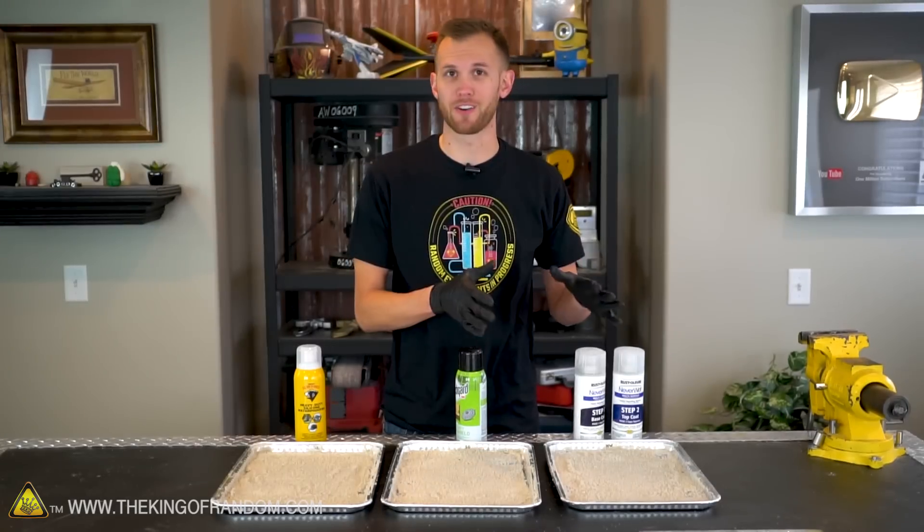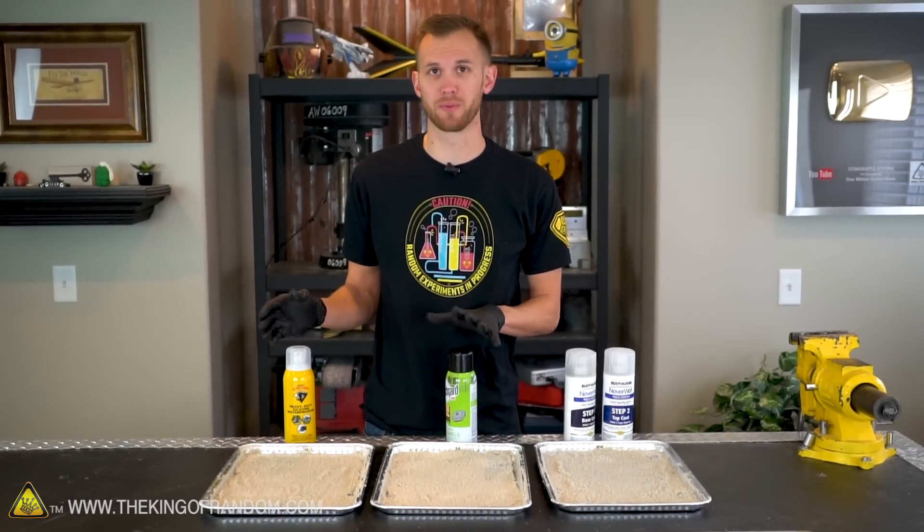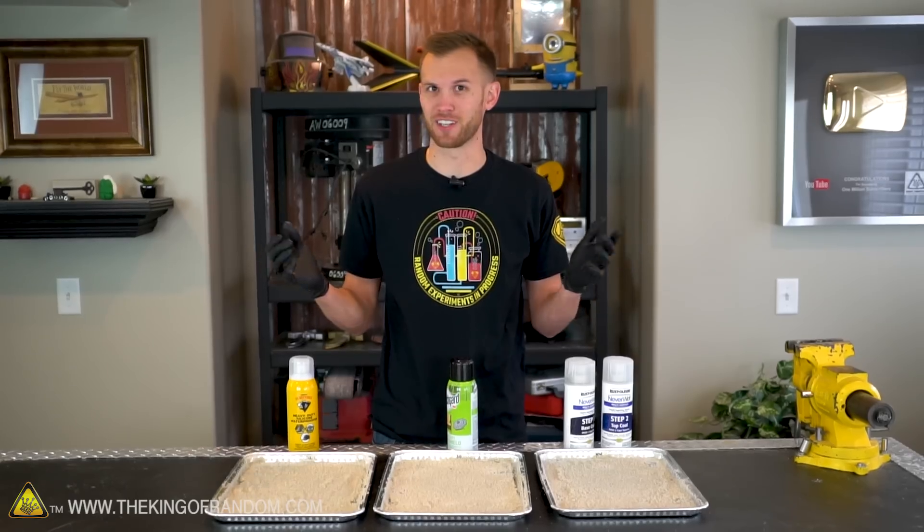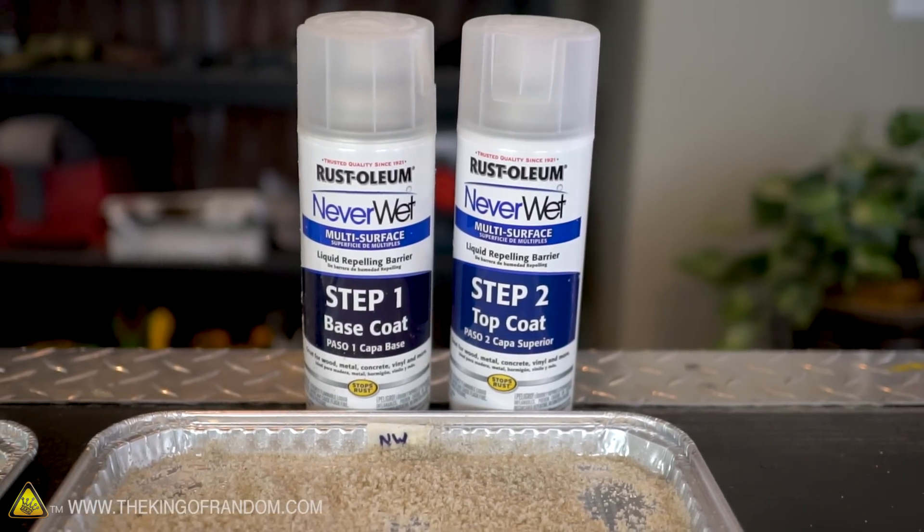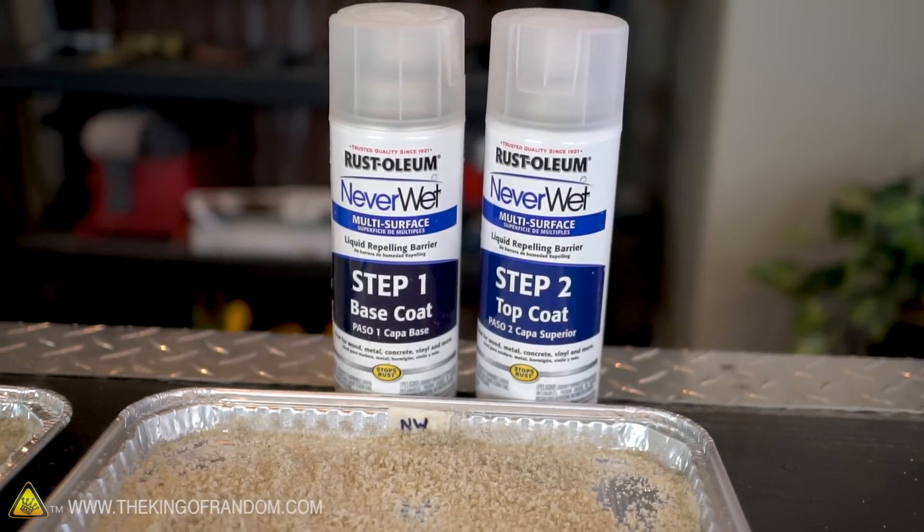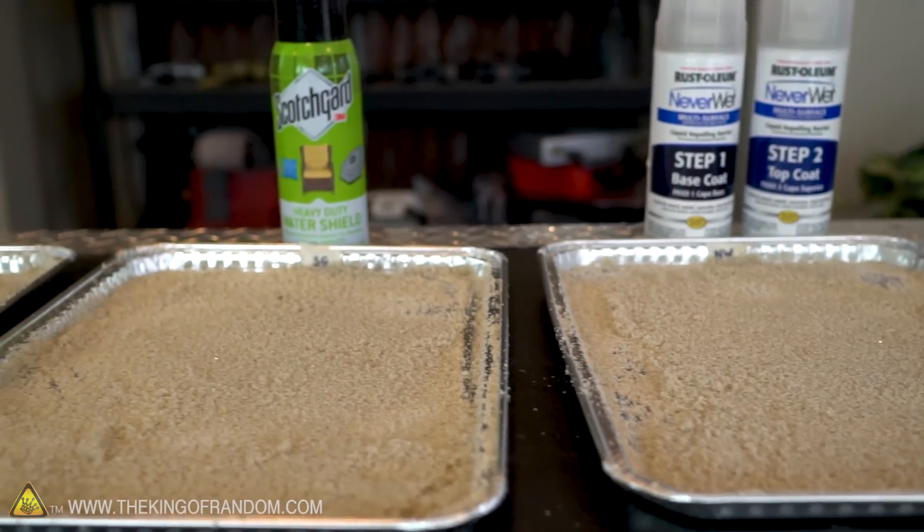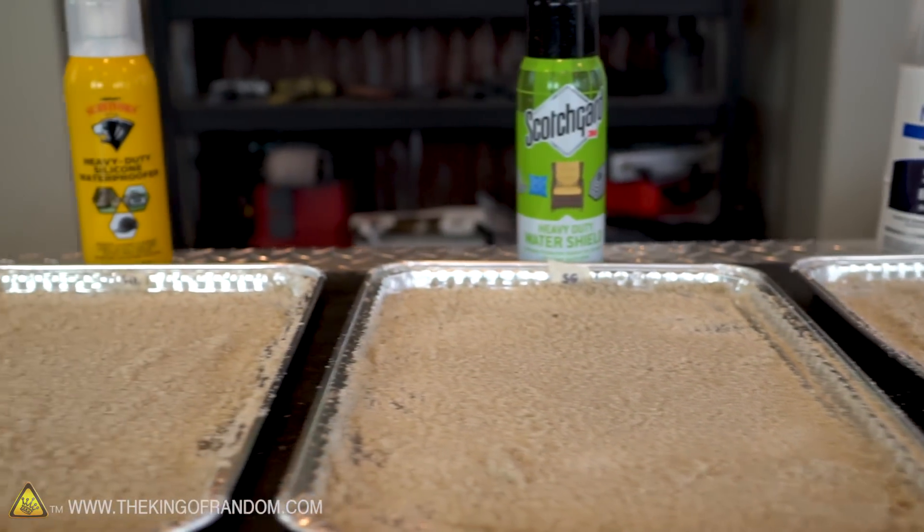There we go, we've got all three of our sands coated in our different waterproofing materials. Now let's let them dry out completely and see which one has the most magic. The never wet of course, because it is a two stage process, we'll need the second layer applied in a little while. So let's let this dry for 30 to 40 minutes and then let's do the same thing with the step two of our never wet.